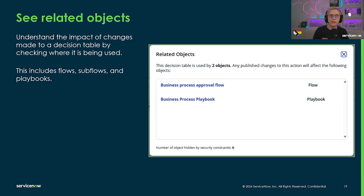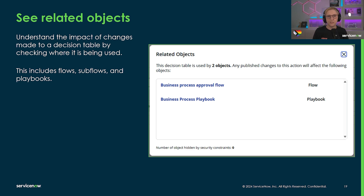And finally, what we already know from flows, subflows, and flow actions is now also available for decision tables. Check the overflow menu item to see related objects for your decision tables. Identify which flows or playbooks this decision table is referenced in to understand the impact of the changes you make.